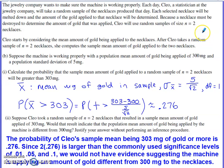Jewelry company wants to make sure that the machine is working correctly. So Cleo is a statistician that works for the company. She's going to take a random sample of necklaces that were produced that day. Each selected necklace will be melted down and the amount of gold applied to that necklace will be determined. Because the necklaces are destroyed to determine the amount of gold that was applied, we're not going to have a very big sample size. We're going with only two necklaces when they try to do this check. So she starts by considering the mean amount of gold being applied in the necklaces. She takes her random sample of two necklaces, she computes the sample mean amount of gold applied to the two necklaces. Suppose the machine is working properly with population mean amount of gold being applied of 300 milligrams and a population standard deviation of 5, same stipulations as we had back in Part A.